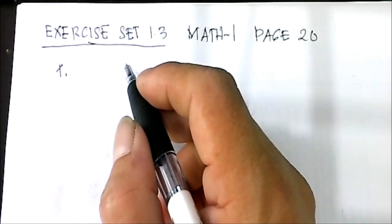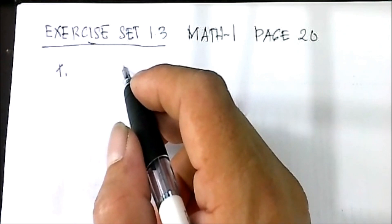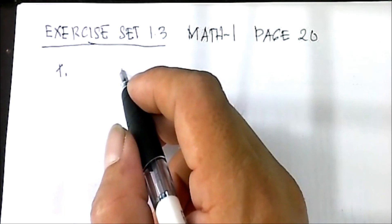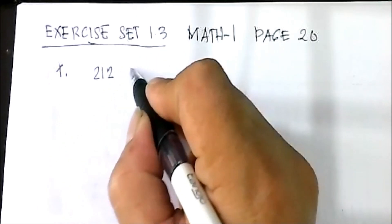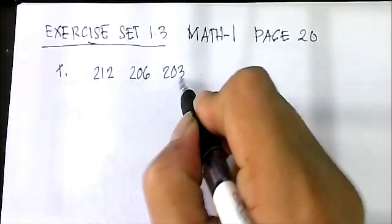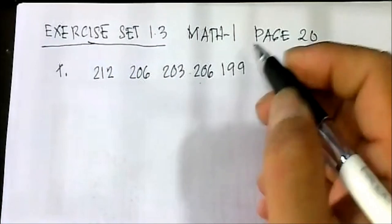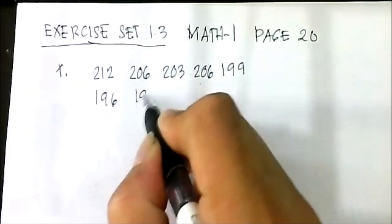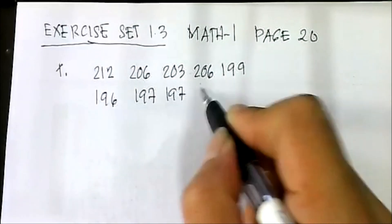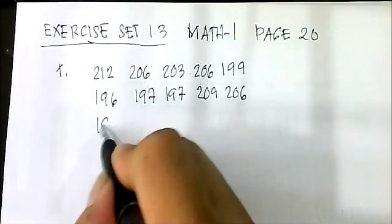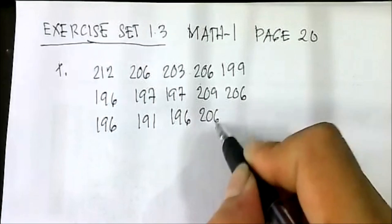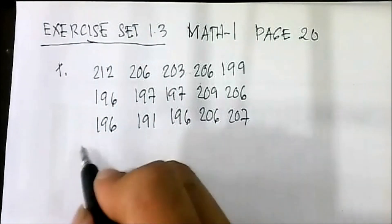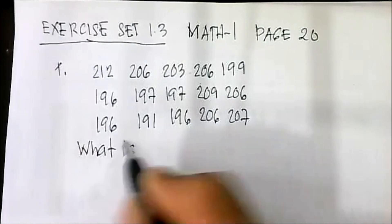Number one: Blood had a summer job packing sweets. Each pack should weigh 200 grams. Blood had to make 15 packs of sweets. He checked the weights in grams, correct to the nearest gram. His measurements are: 212, 206, 203, 206, 119, 196, 197, 209, 206, 196, 191, 191, 196, 206, and 207.